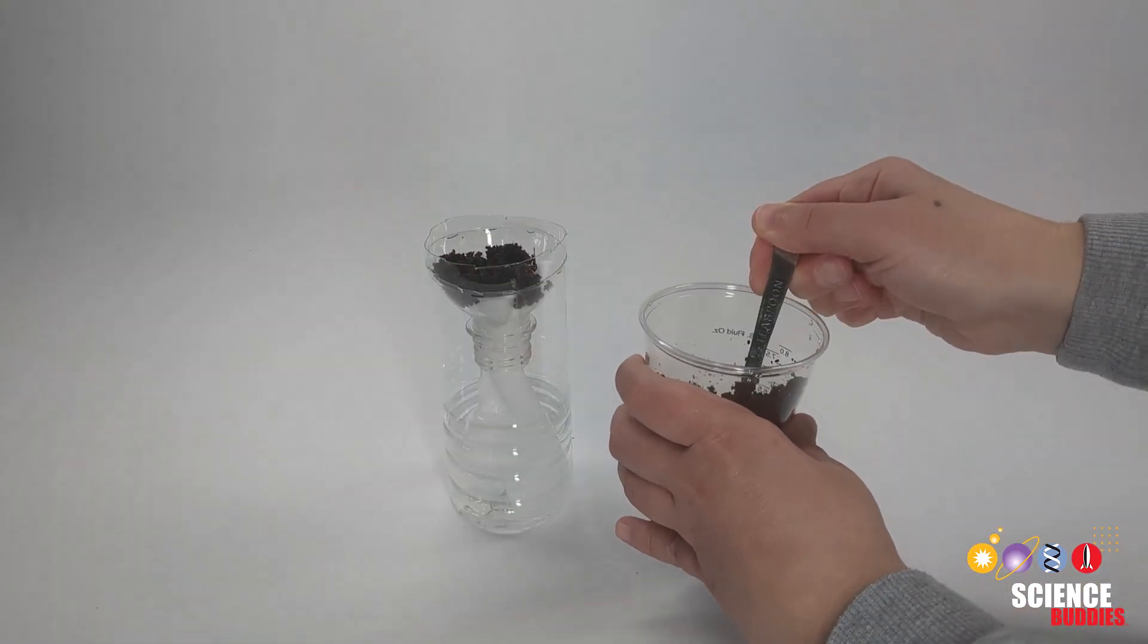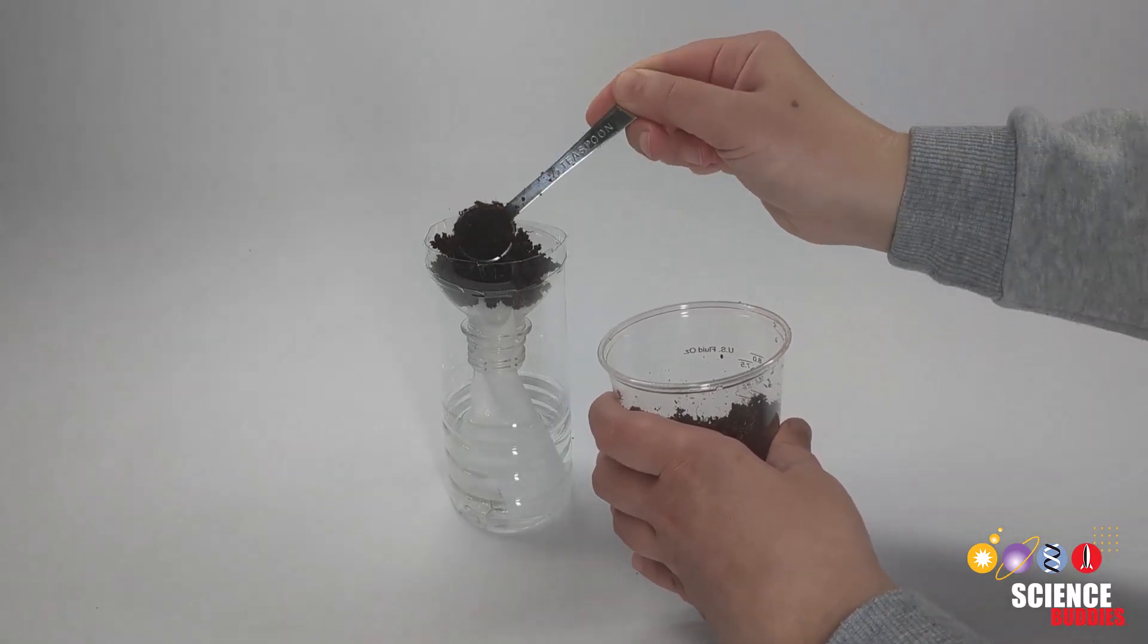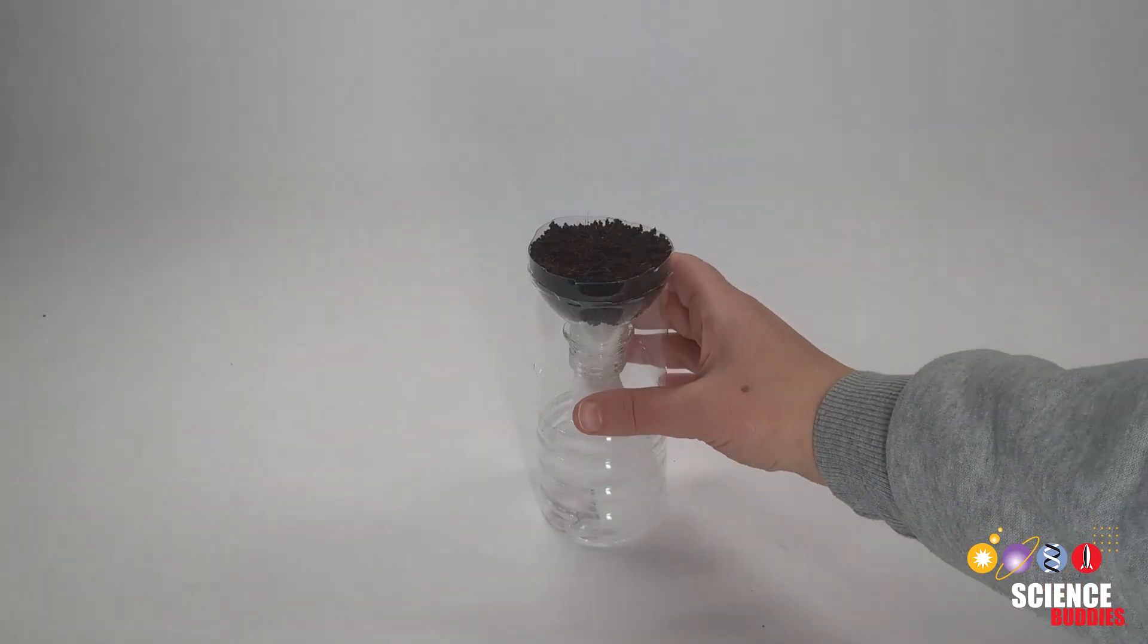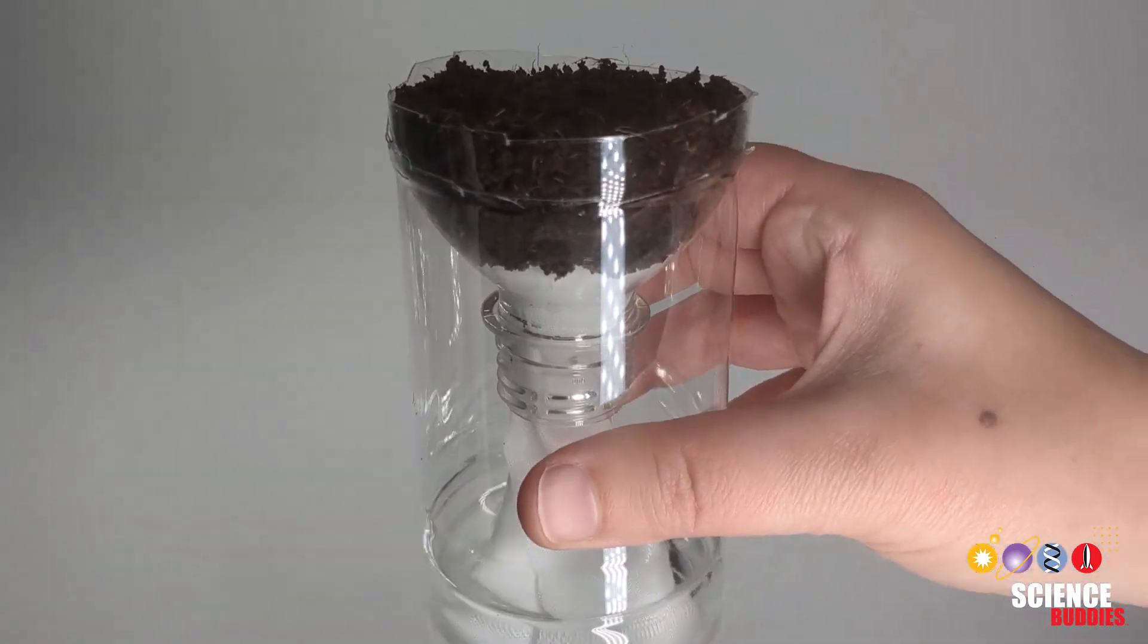Carefully transfer about half of the coconut core into one of the two bottles. Fill them with the coconut core to the top edge or lip of the bottle.